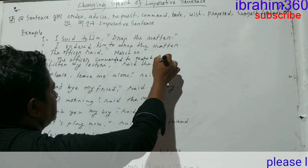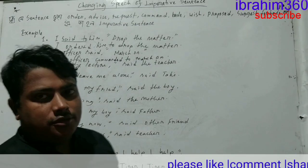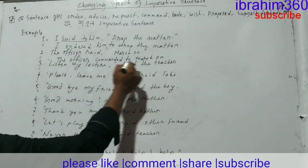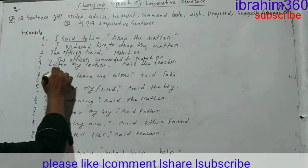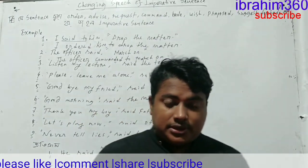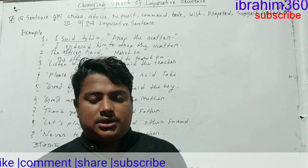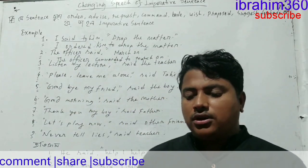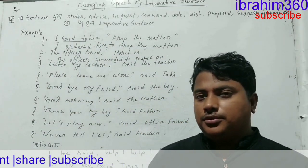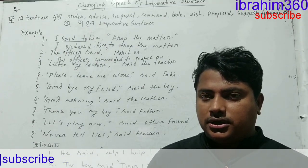The imperative sentence is very easy. The next sentence is: teacher said, listen to my lecture. Actually, ordinary instructions are order. But if these are for someone's benefit — if they are for welfare — then it becomes advice. For example: listen, work carefully.